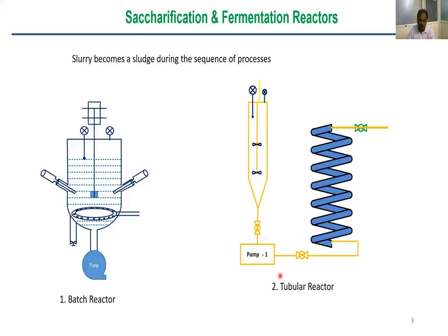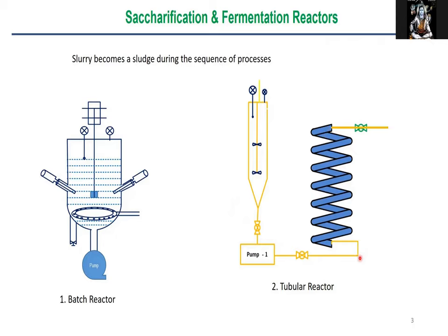Following Dr. Amir's proposal, a tubular reactor can be used — a small tank but with large volume, about 90% of the volume in tube form. Material makes one pass through the tube. If the identified saccharification time is 18 hours, then volume divided by flow rate must equal 18 hours. Calculations show this could require several hundred meters or close to a kilometer of tubing.